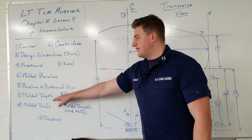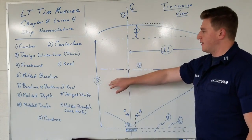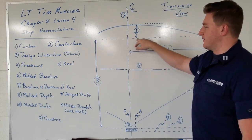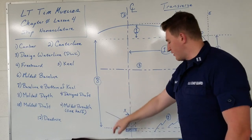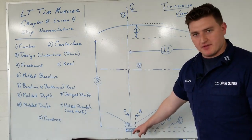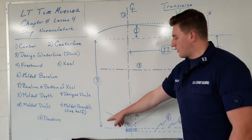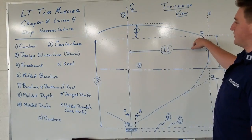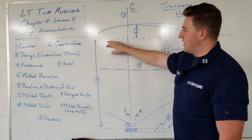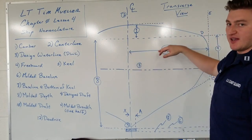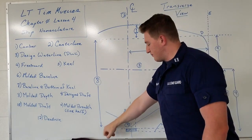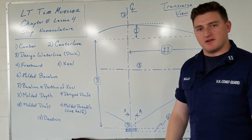Moving on, we have molded depth, number eight. This dotted line runs from point D — the deck edge — all the way down to the molded baseline, not the baseline at the bottom of the keel. You can think of it as the height of the ship at the center line minus the camber, and by definition, camber is zero at the deck edge. So you take that deck edge point all the way down to the molded baseline, and that is your molded depth.